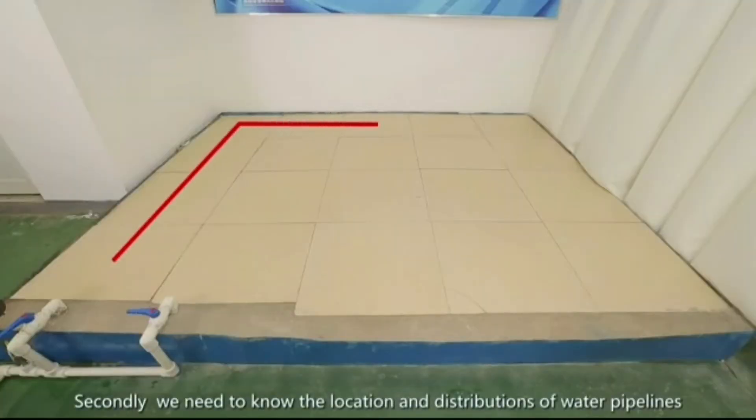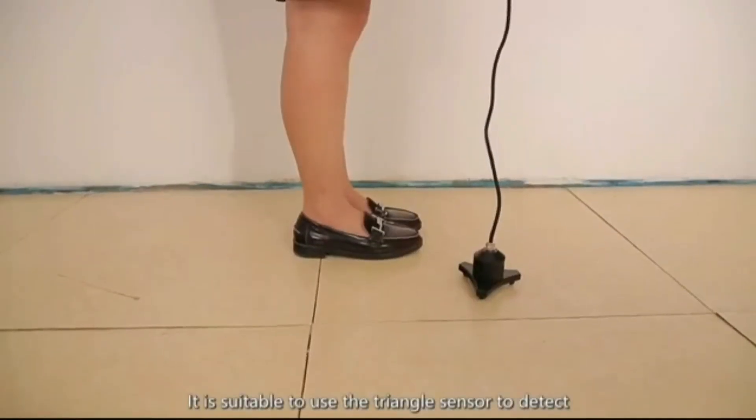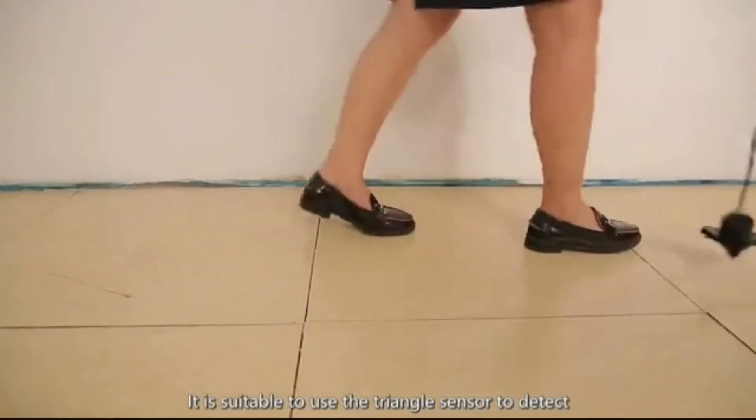Secondly, we need to know the location and distributions of water pipelines. Now we have known the direction of the pipeline in this site, which is marked with a red line. It is suitable to use the triangle sensor to detect.